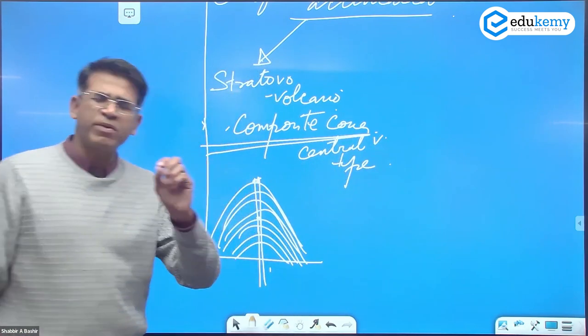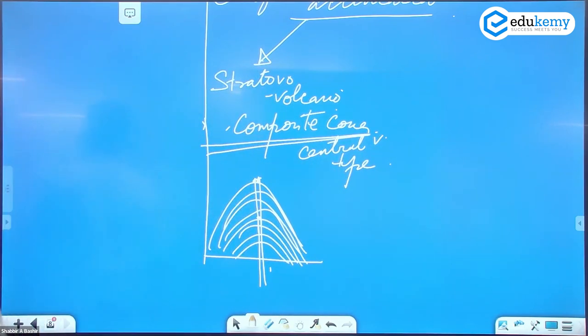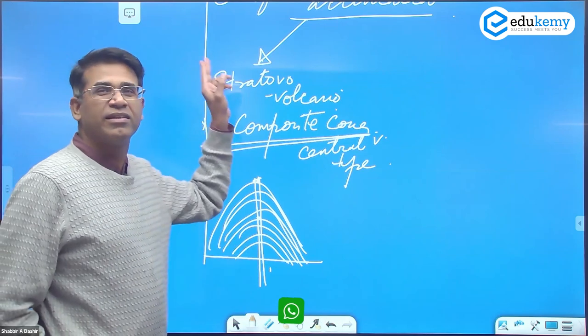Fissure type sirf basalt nahi banta hai, baaki sare hoote hai central vent type. Remember this, the fissure type is only for basalt. The basalt ones. All the other volcanic accumulations they are linked to a central vent, the central pipe.